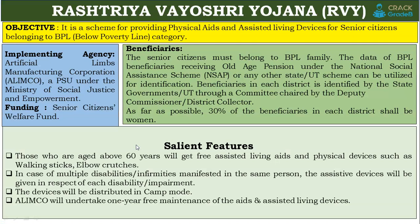Our next scheme is Rashtriya Vayoshri Yojana, called RVY in short. The main objective of this scheme is to provide physical aids and assisted living devices for senior citizens belonging to the Below Poverty Line category.